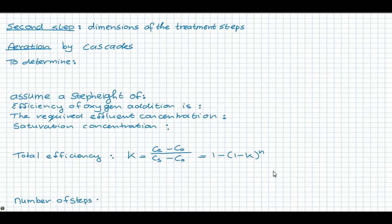The second design step is to estimate the dimensions of the different treatment steps. For the aeration step we choose the cascades, since they are robust and easy to operate. To design the aeration step we need to know the length of the cascades, the number of steps, and the width of the troughs.